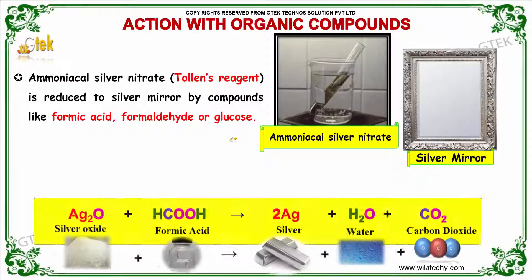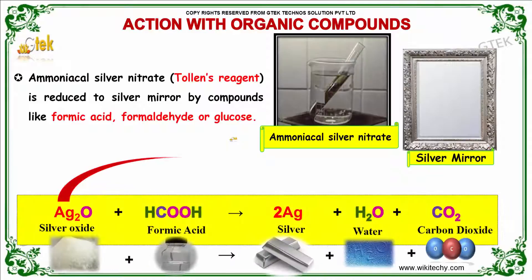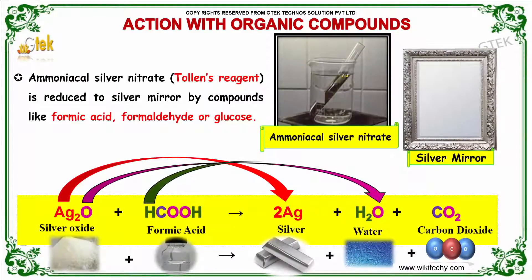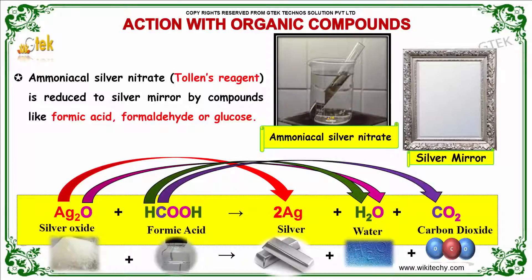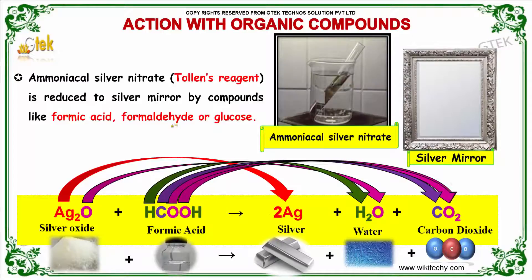Action with organic compounds: ammoniacal silver nitrate is called Tollens' reagent. It is reduced to a silver mirror by compounds like formic acid, formaldehyde, or glucose. Silver oxide with formic acid gives silver, water, and carbon dioxide.